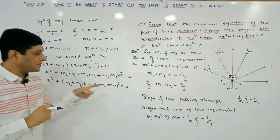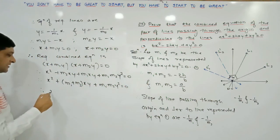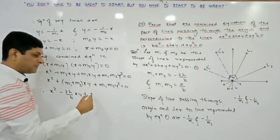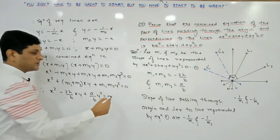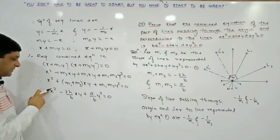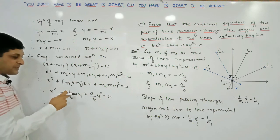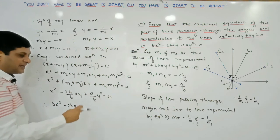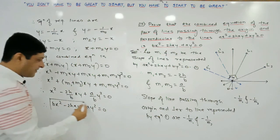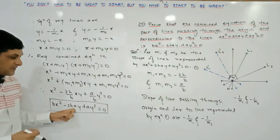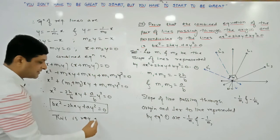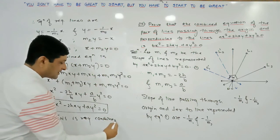Substituting the values: M1 plus M2 is replaced by minus 2h upon b, and M1 into M2 is replaced by a upon b. So we get x squared plus (minus 2h upon b)xy plus (a upon b)y squared equals 0. Multiplying both sides by b to eliminate the denominator: bx squared minus 2hxy plus ay squared equals 0. This is the required combined equation.